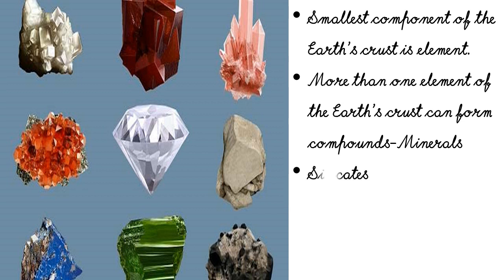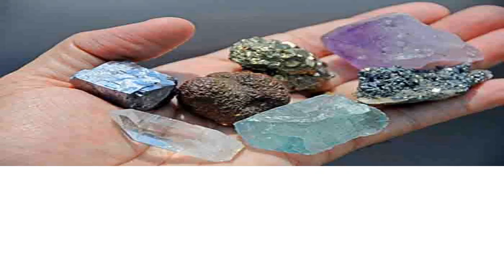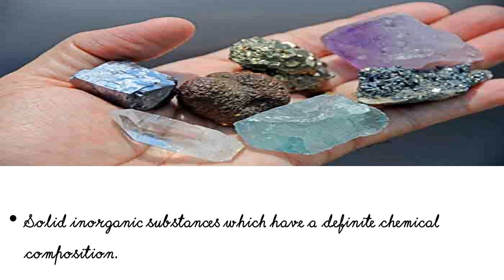The main mineral groups are silicates, carbonates, sulfites, metal oxides, etc. Minerals are a combination of elements which occur naturally in rocks. These are solid inorganic substances which have a definite chemical composition. More than 2000 types of minerals have already been identified, but only a few of them are rock-forming minerals. Minerals are useful for plants and animal life on Earth.